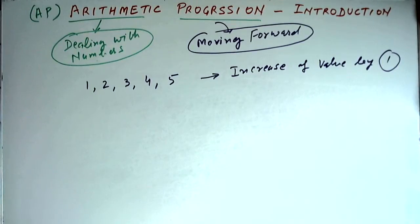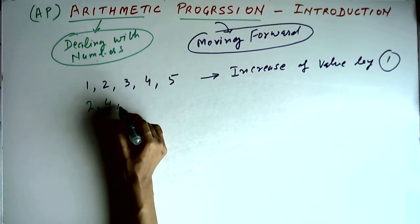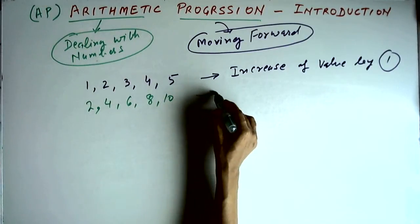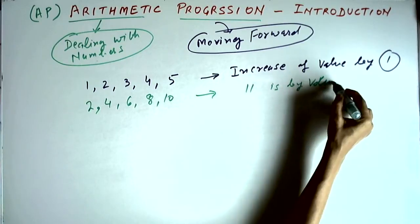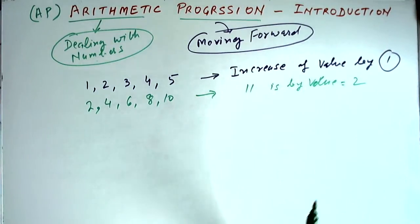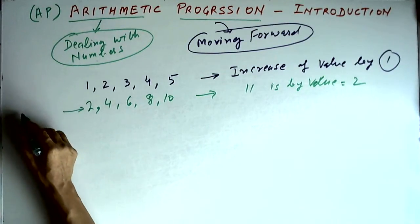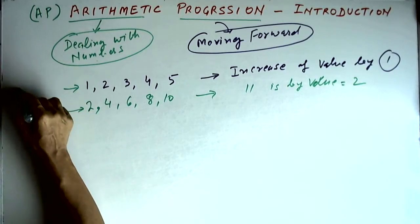Similarly, if we have a series like 2, 4, 6, 8, 10, here the increase is by value 2. This can also be called as the series of even numbers.